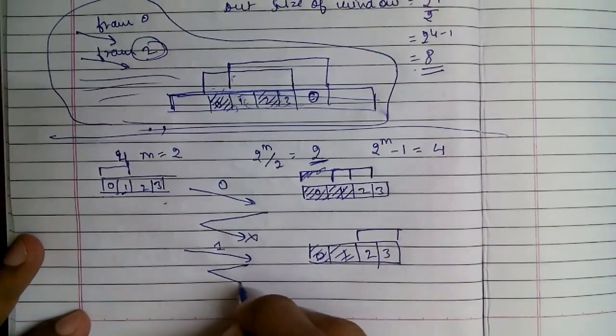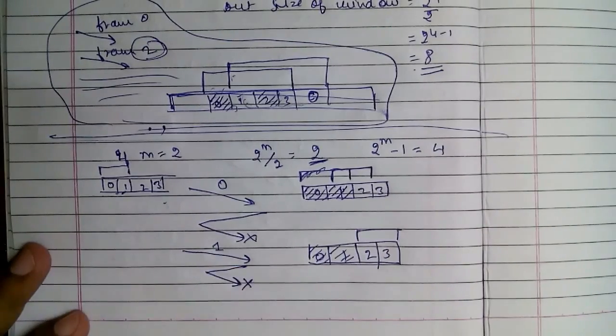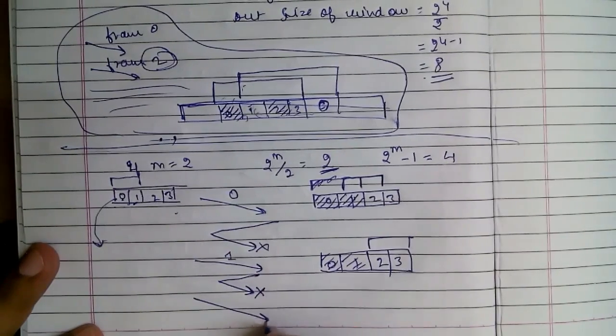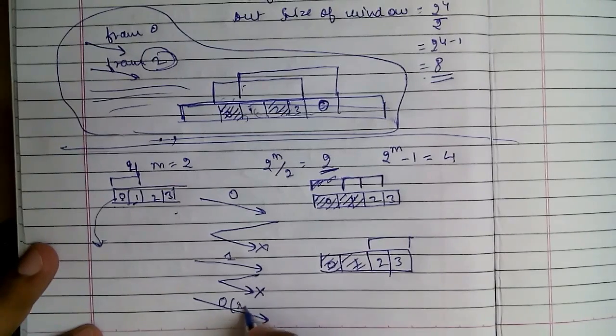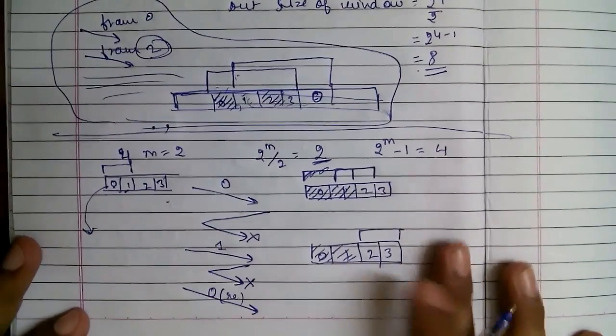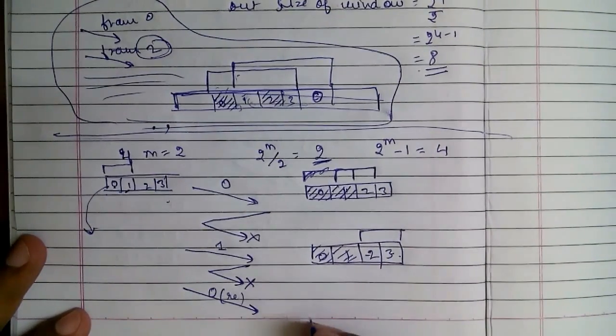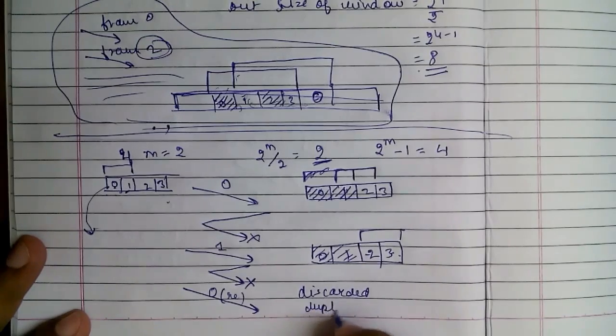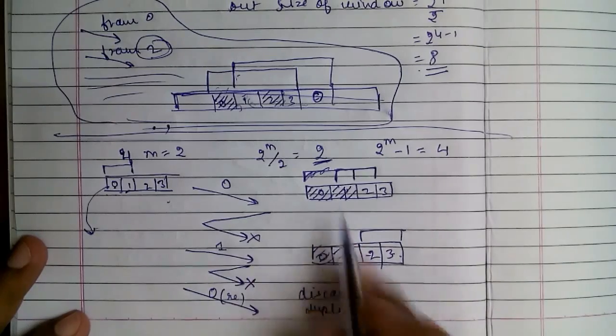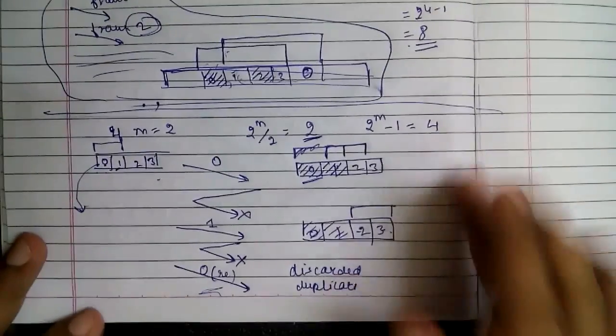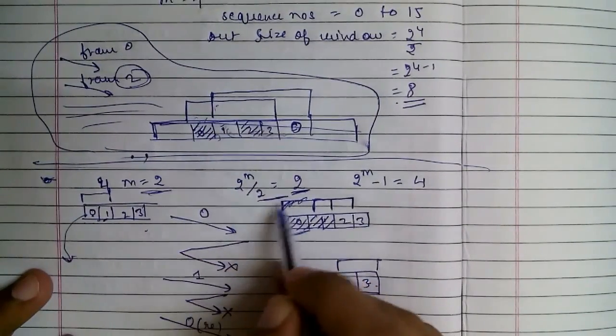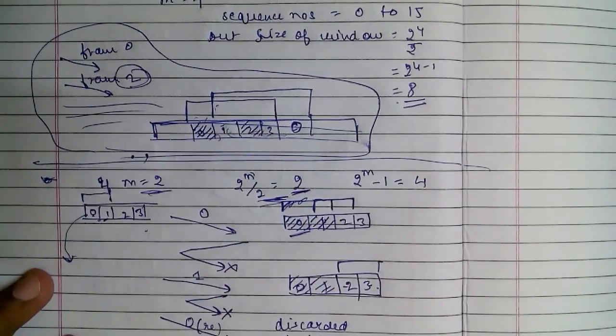So what happens then? As the timer of this will expire, as we have not received the acknowledgement for this bit 0, so it will resend frame 0. Frame 0 is resent, but it is not within the window size, so it will be discarded and considered as a duplicate, which is actually correct because 0 is already received. So it is discarded. So this is justified that the window size should be 2 raised to M by 2.